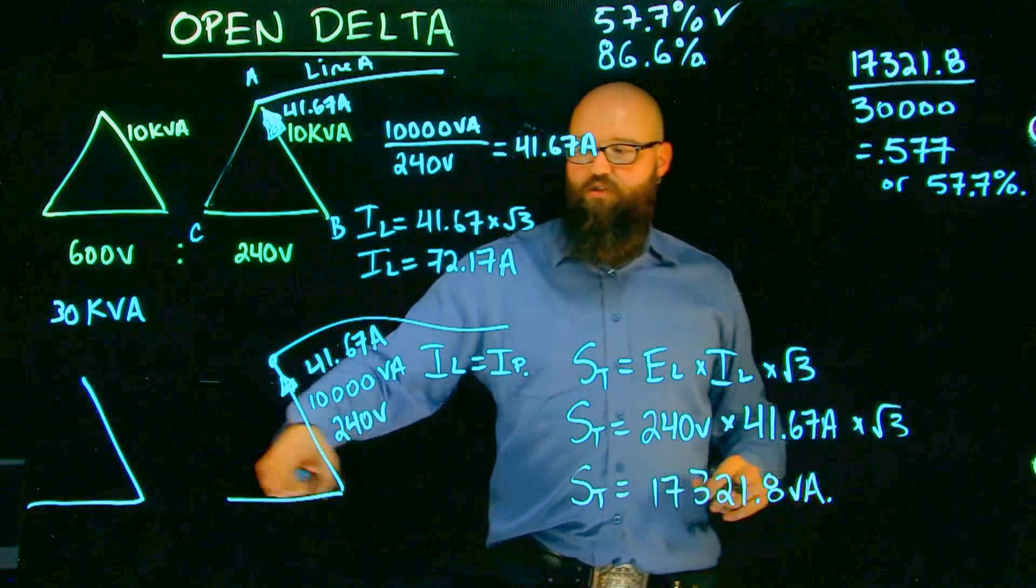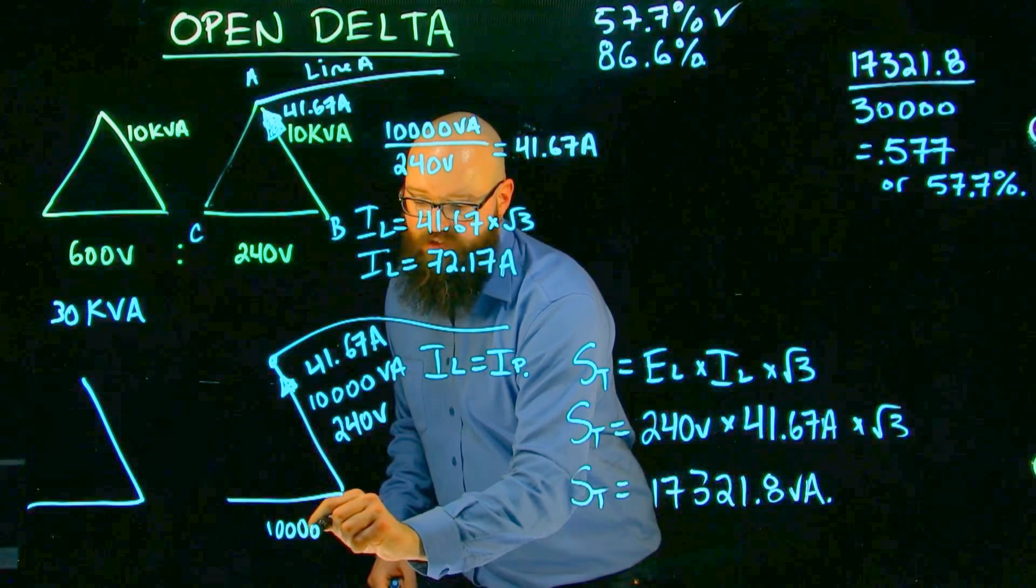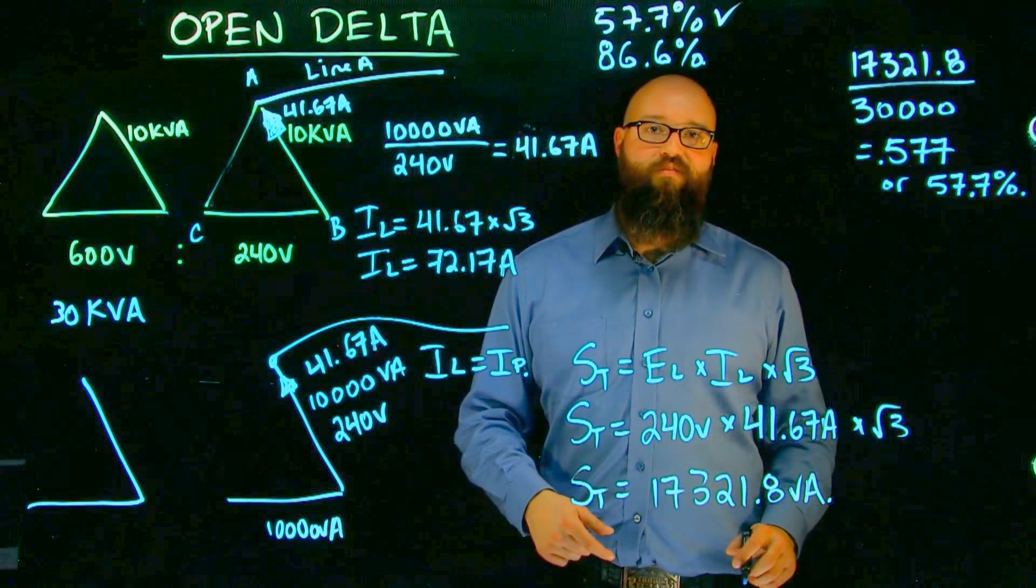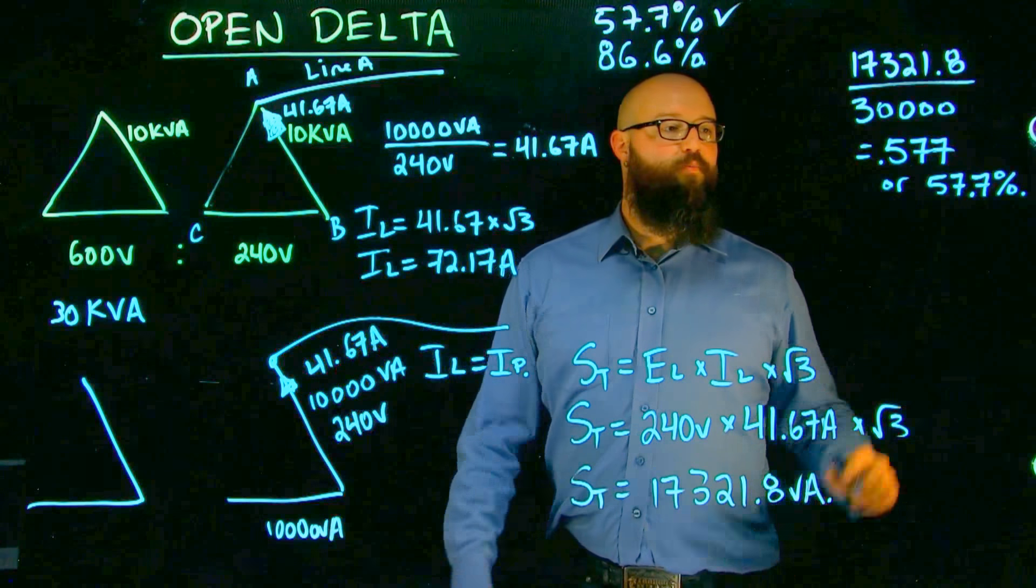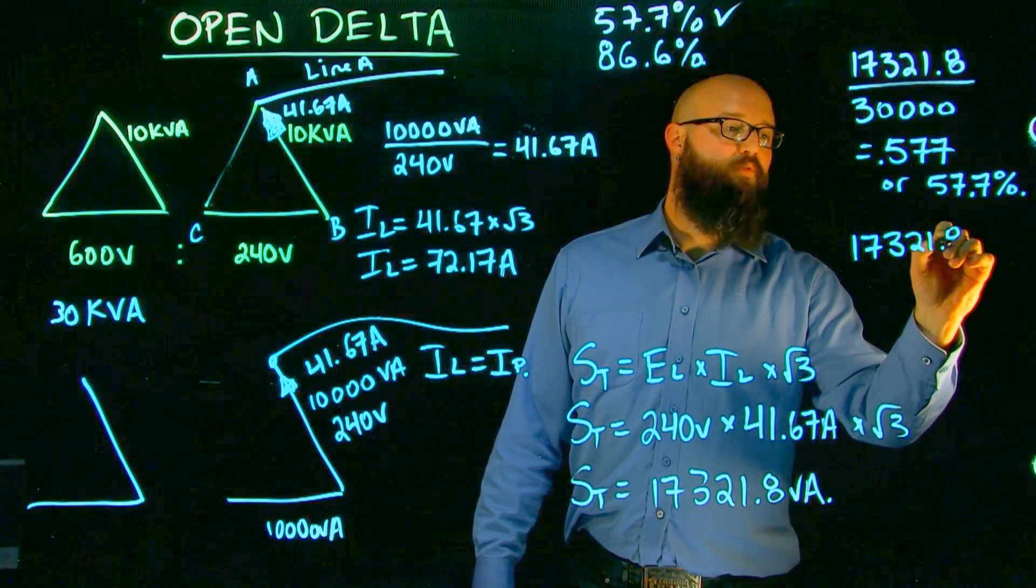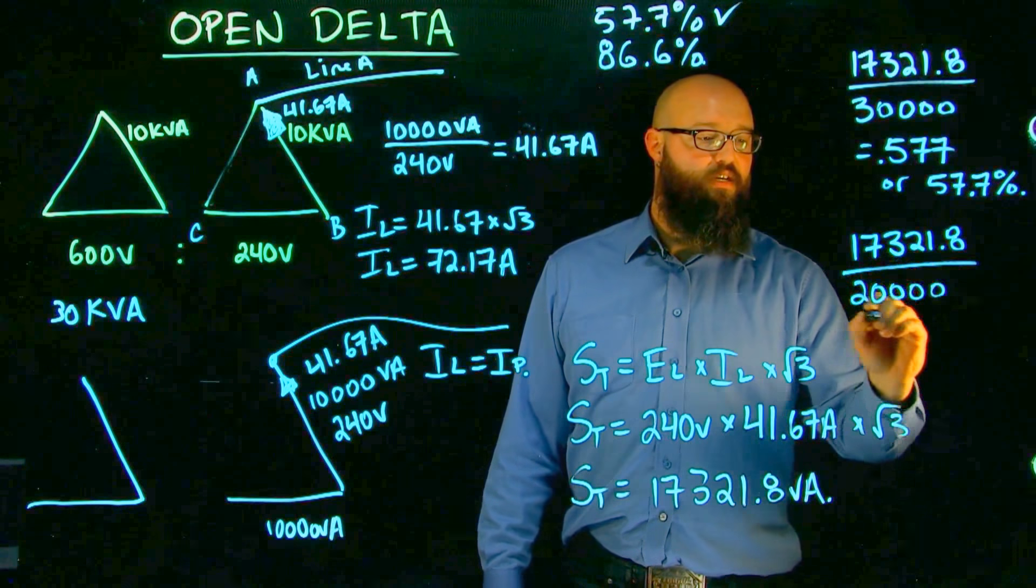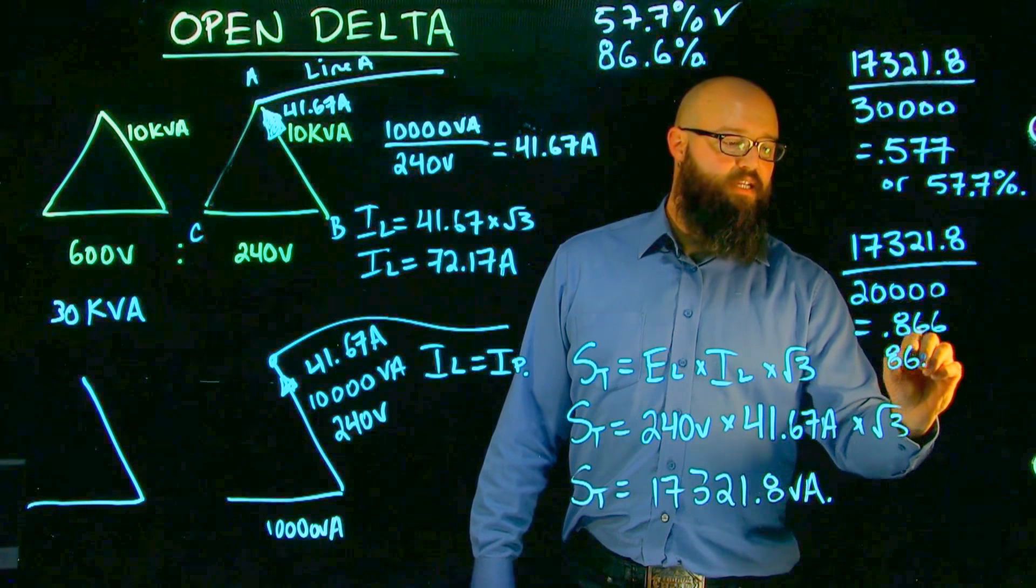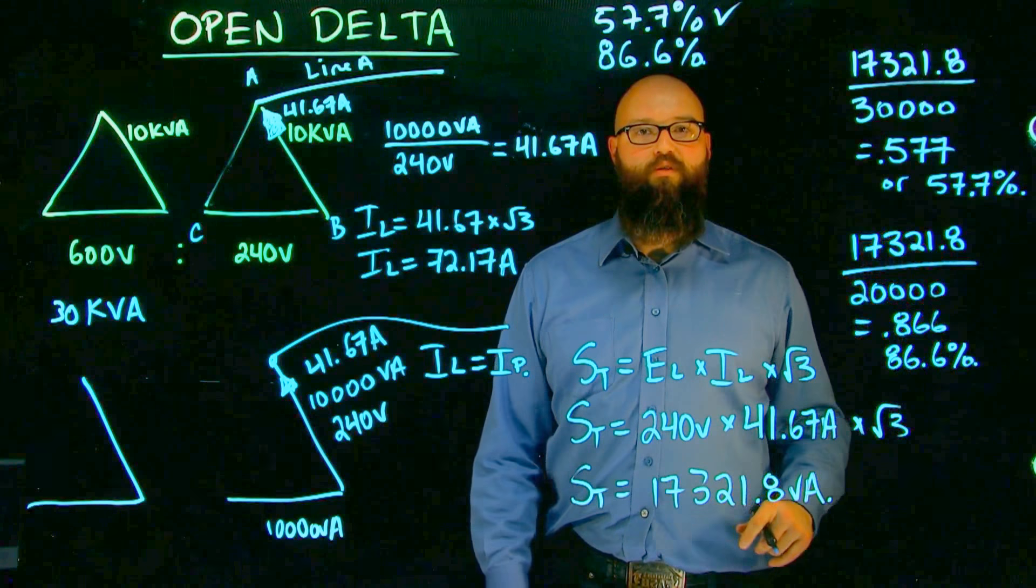If we just focus on the two coils, we can see if I have 10 kVA or 10,000 VA and another 10,000 VA, what they should be able to put out is 20,000 VA. But again, because we have this connection in open delta, what we see is this 17,321.8 compared to what they should be able to put out of 20,000 gives us 0.866 or 86.6% of reduced capacity of what those two normally would give out.